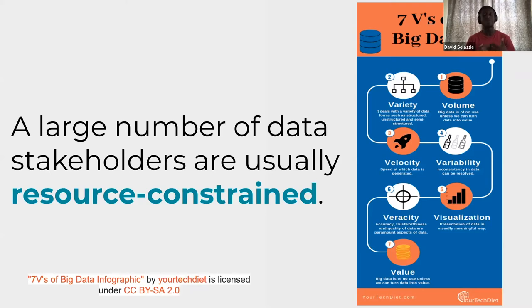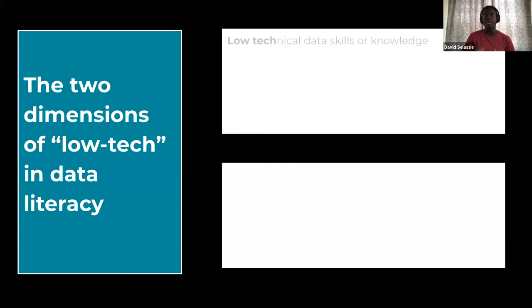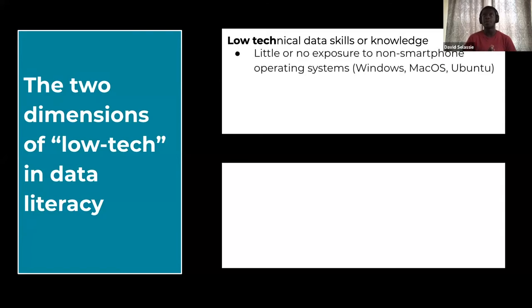This is where the definition of low-tech comes in. I think about low-tech in two dimensions. The first is low technical data skills or knowledge — for example, data stakeholders with little or no exposure to non-smartphone operating systems. A lot of data literacy trainings require the ability to interface with Windows, Mac, or Ubuntu, but many people today are introduced to the digital age through smartphones and cannot access those interfaces. So it becomes a barrier.